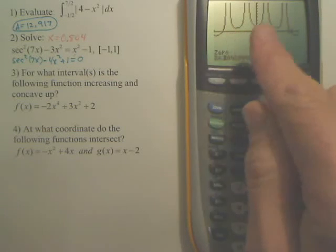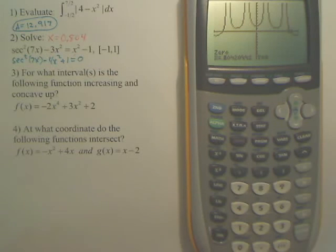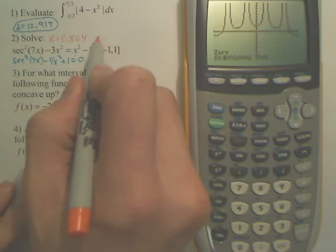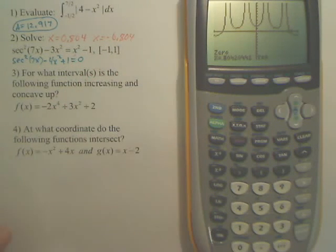I'm not going to actually find the other one right now, but it's the same process. You just grab it from this side, find the value, and it actually will be a negative. For this particular problem, it actually is a negative. Same answer.